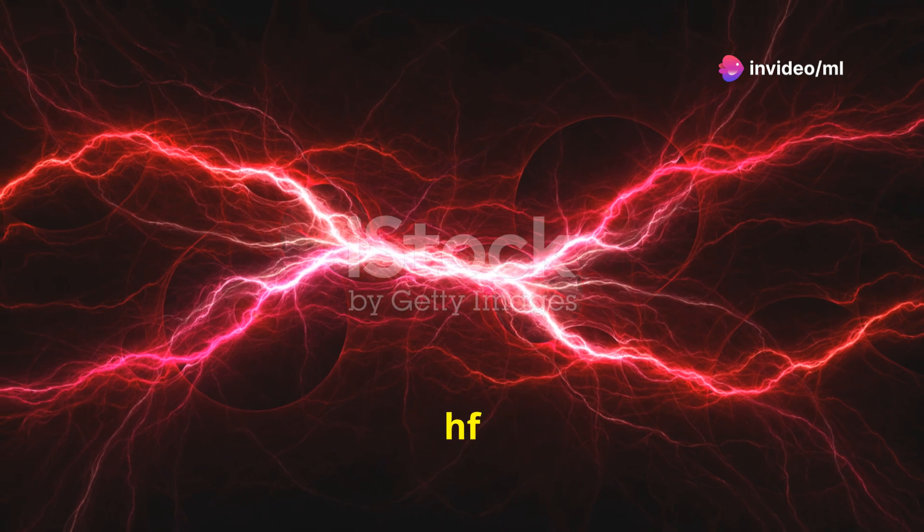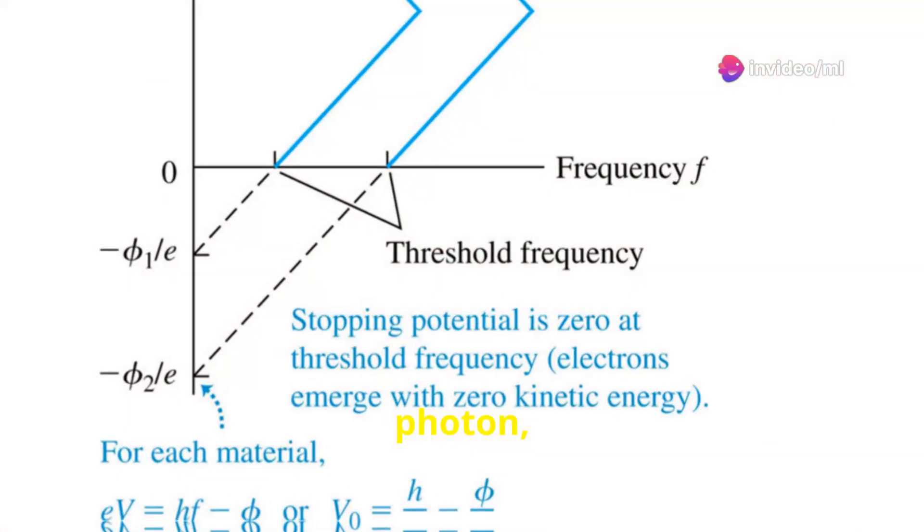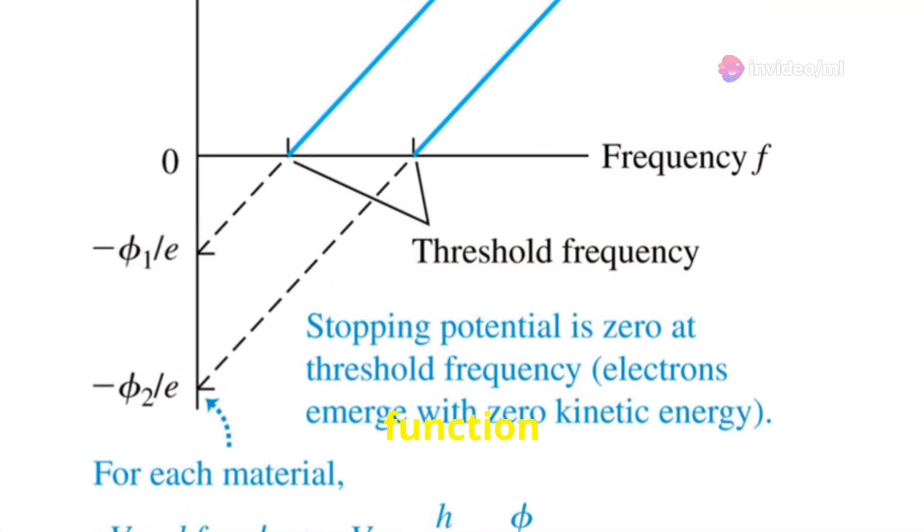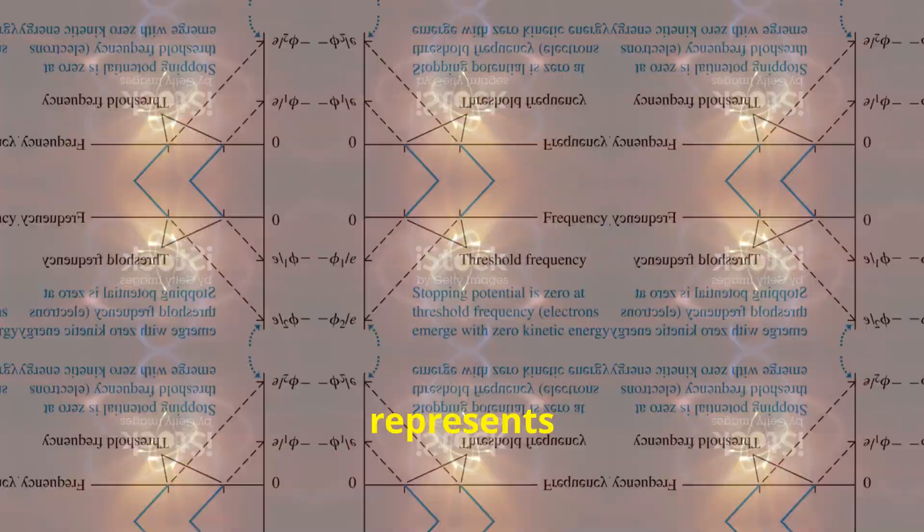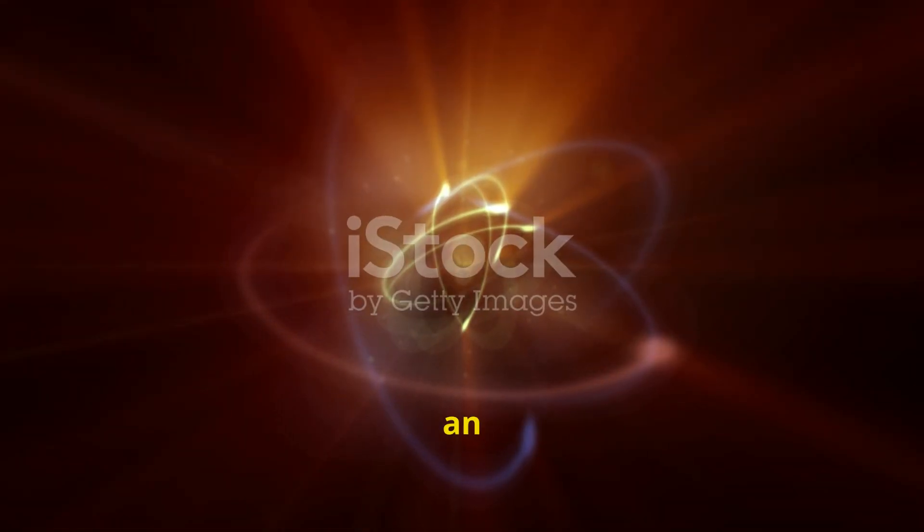where KE is the kinetic energy of the emitted electron, hf is the energy of the incident photon, and W is the work function of the metal. The work function represents the minimum energy required for an electron to escape from the metal's surface.